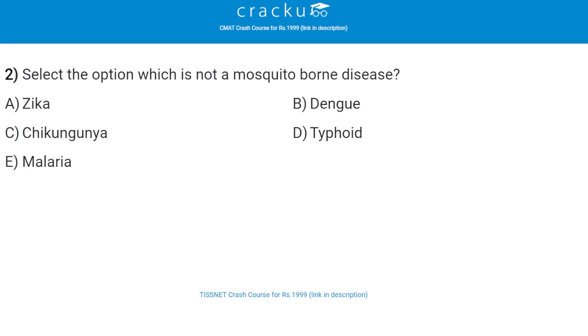Next, select the option which is not a mosquito-borne disease. The correct answer is thyroid, that is option D.